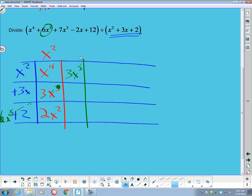But if that's going to be a 3x cubed, and this is an x squared over there, then that means this would have to be a 3x. And if that's a 3x, then this is a 9x squared, and this is a 6x.